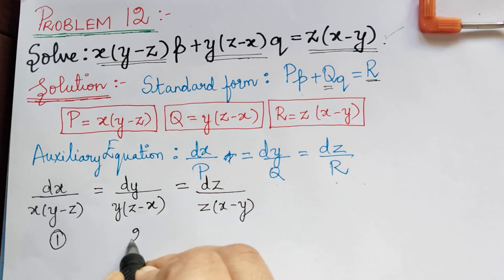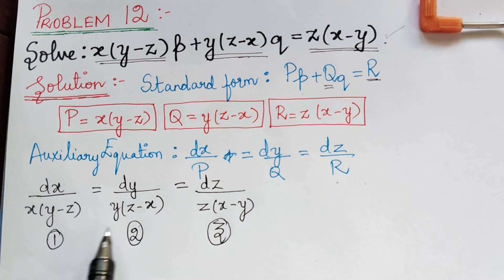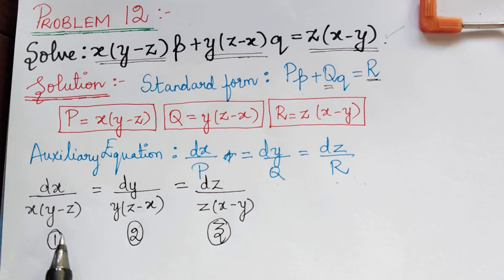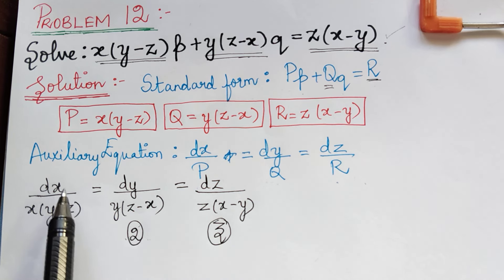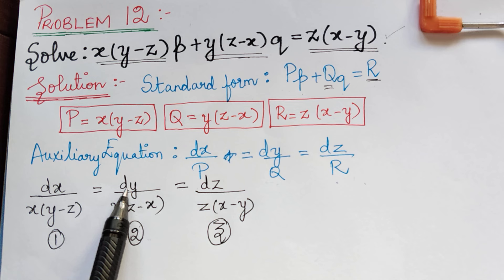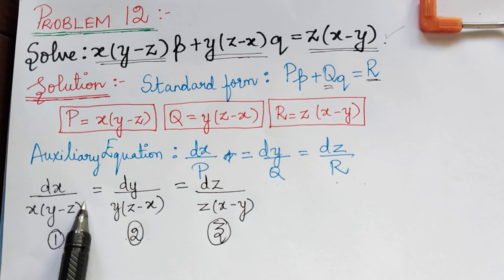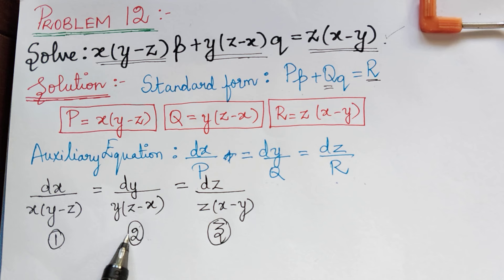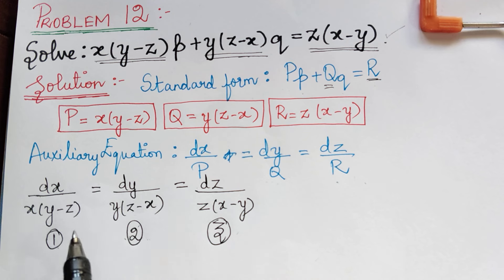We shall mark the three ratios as 1, 2, and 3. Now we have to check whether we should use the method of grouping or the method of multipliers. Comparing ratios 1 and 2, we see that x, y, and z appear in the denominator with only dx and dy, so variables cannot be separated. Similarly for ratios 2 and 3, and 1 and 3. Therefore, we cannot use the method of grouping and must use the method of multipliers.